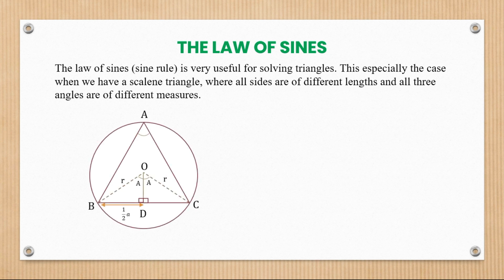This is how we derive the sine rule. We have a circle that is circumscribing a triangle — a triangle set within. Inside this triangle, we've dotted a line from the center. As you can see, this angle here is twice this angle. If the angle here is equal to A, this angle here is equal to 2A. Because we've split this right through the middle, this side is R and this is R, where R is the radius of the circle.